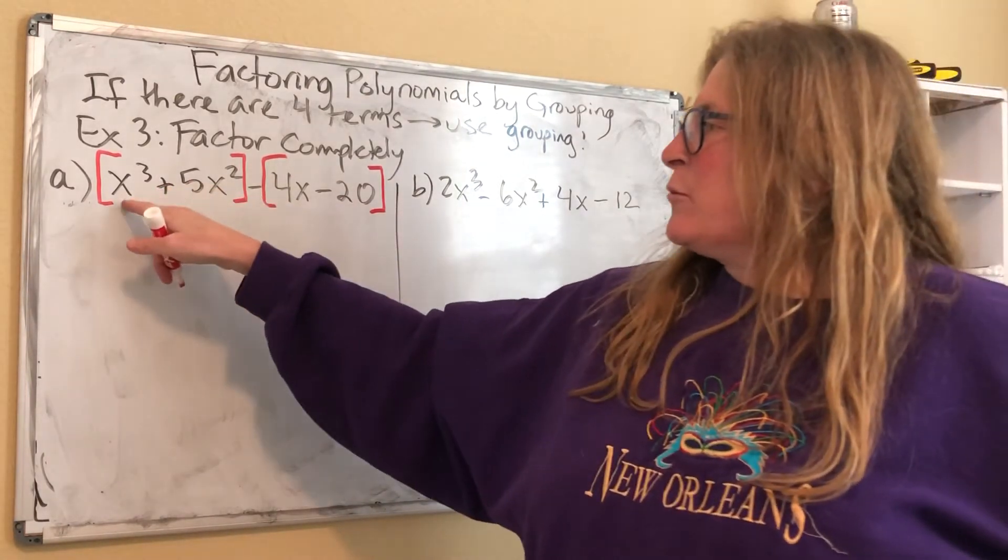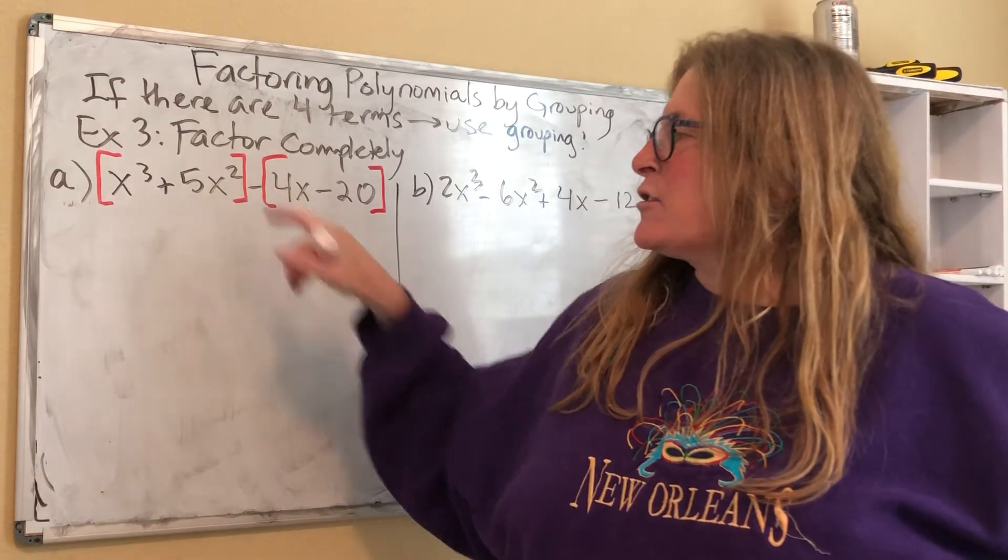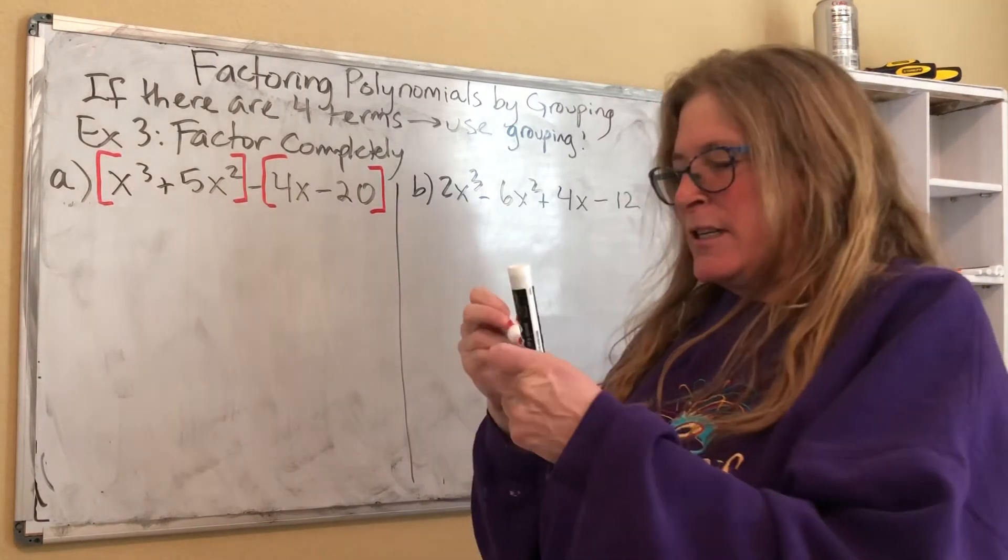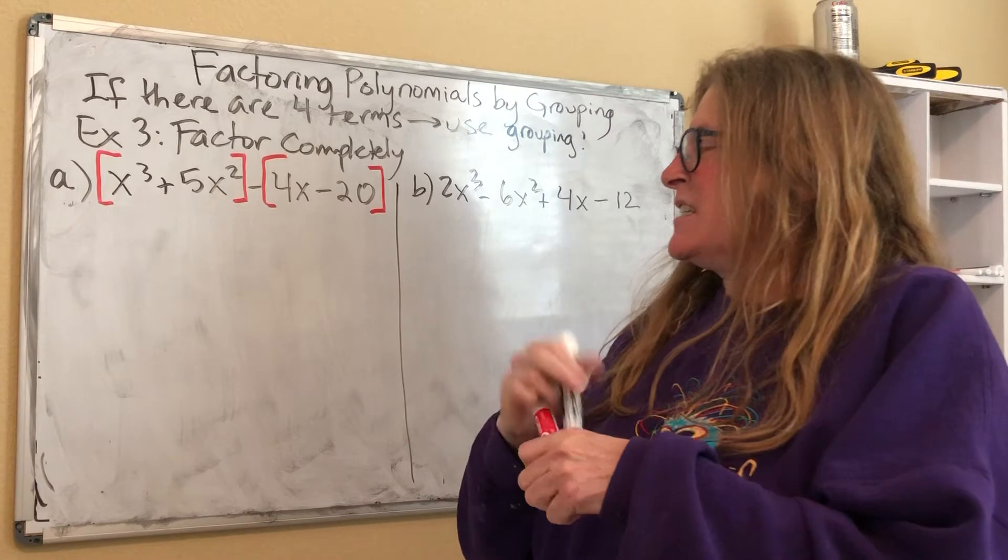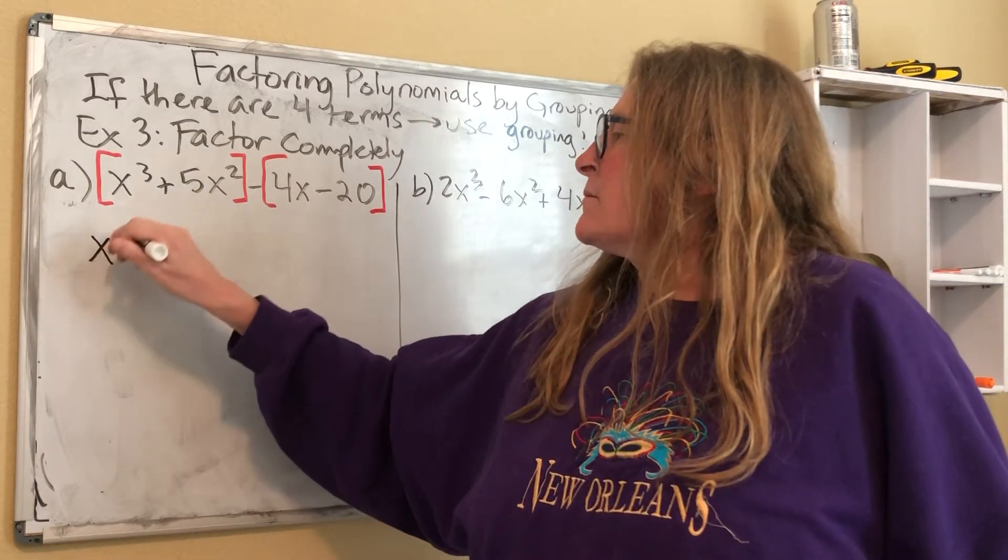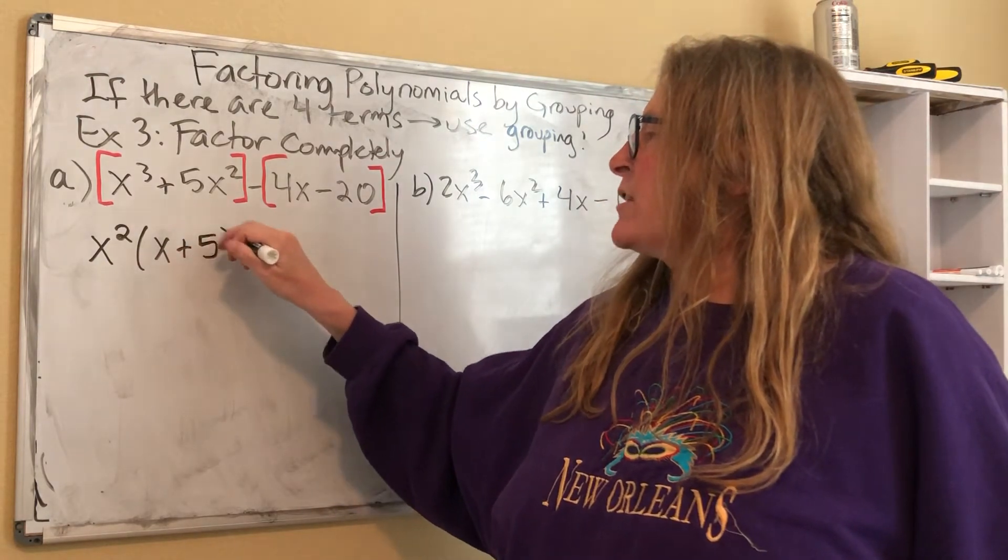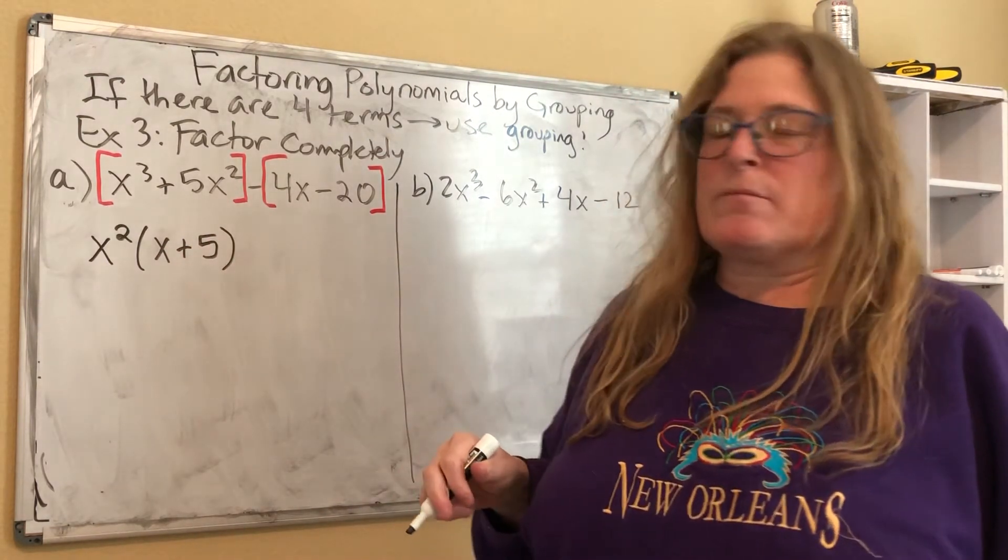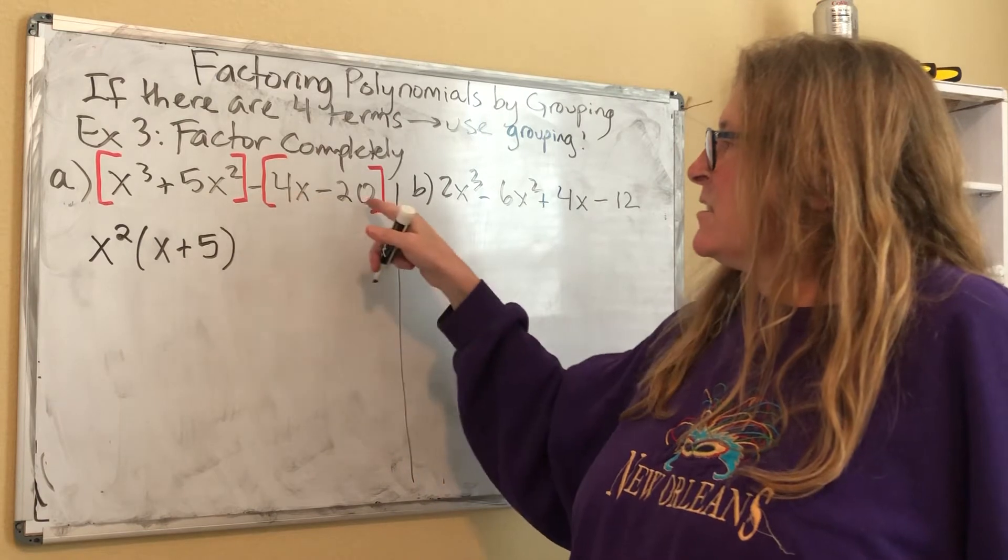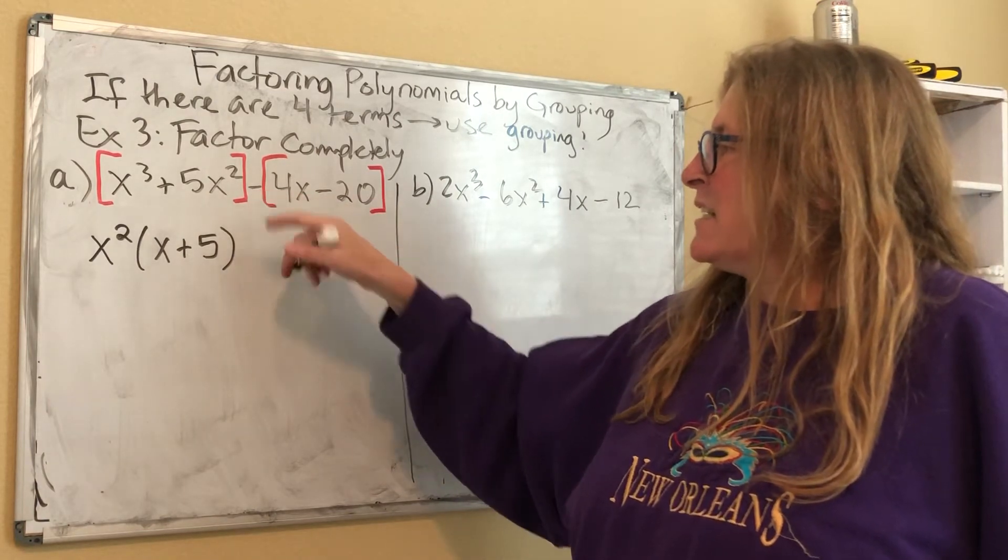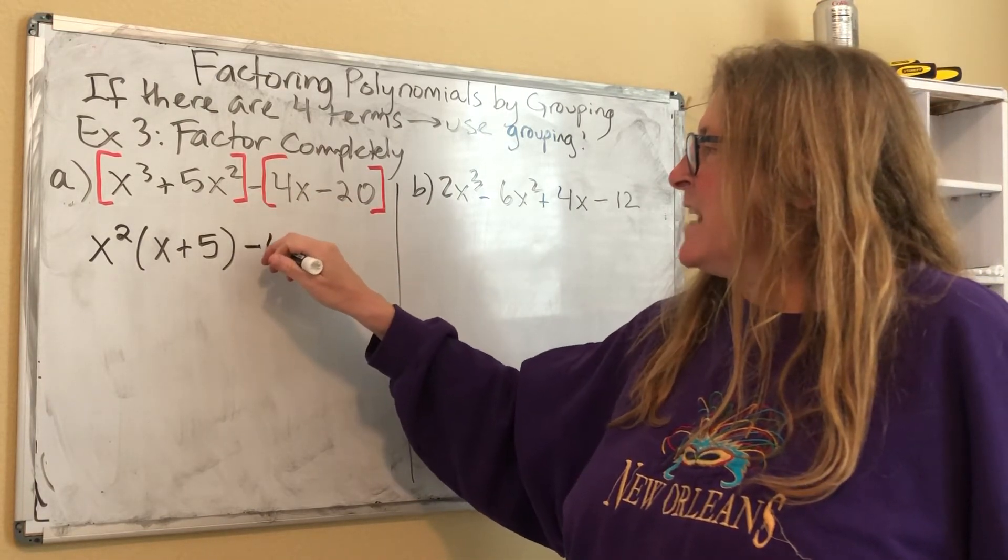And I'm going to look for the greatest common factor in the first two terms. And the greatest common factor in the first two terms is x squared. So this is my diagnosis phase. I'm seeing, okay, is grouping going to work on this patient here? Okay, in the second two, notice that's a minus. So I'm actually going to factor out a negative four.